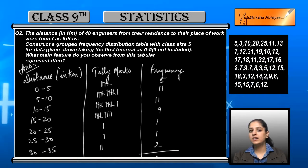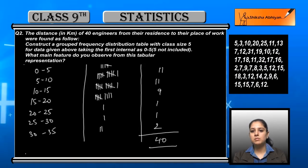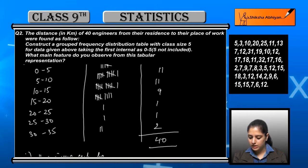When we add all of them, we get 40. So this confirms that the data we collected and represented is completely correct.